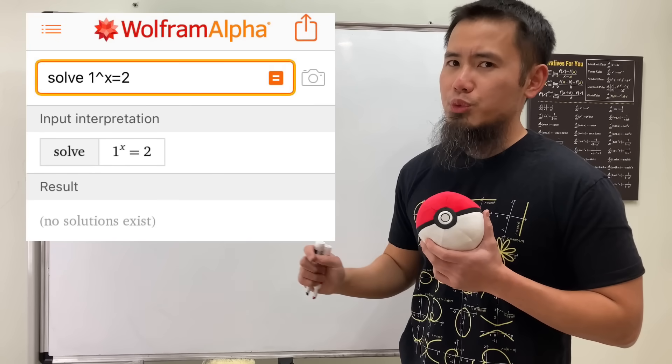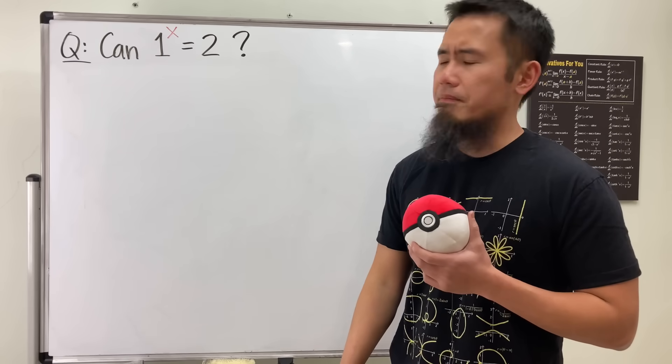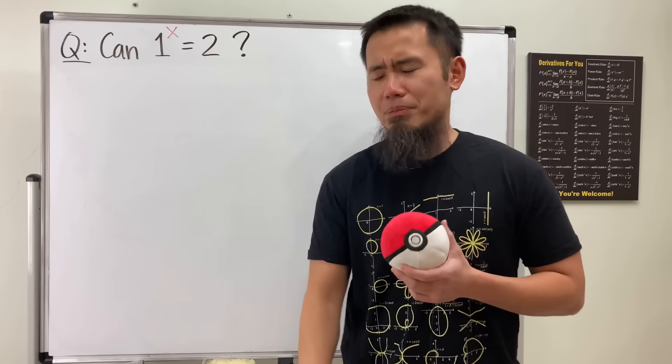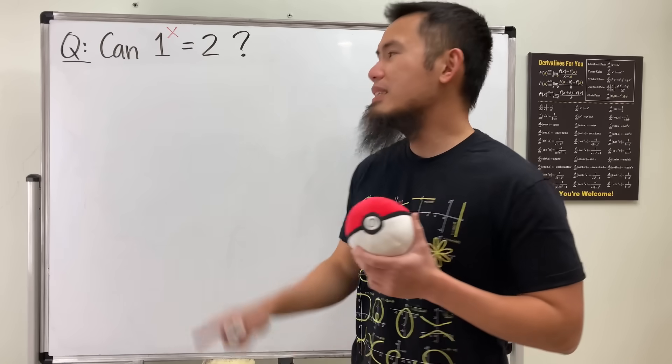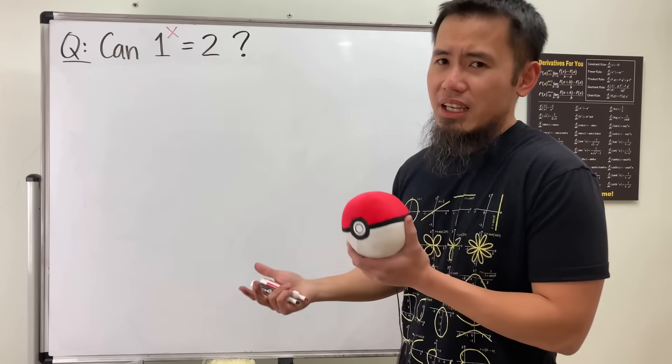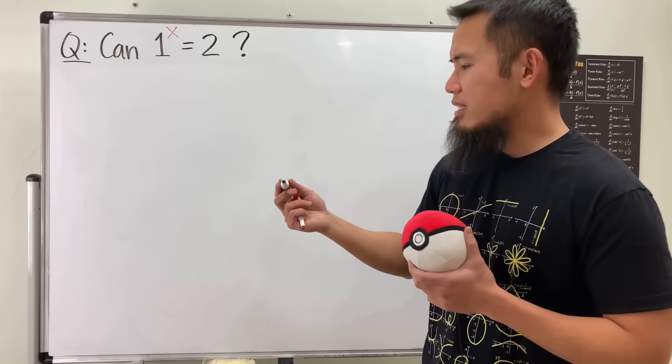And it doesn't even give you any complex solution for this. That's really bizarre, right? So maybe that's the end of the video. But no, of course not. Let's still try to solve it and investigate if we can actually get some answer, maybe from the complex world that WolframAlpha couldn't.